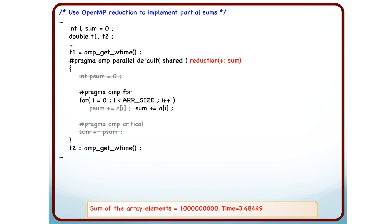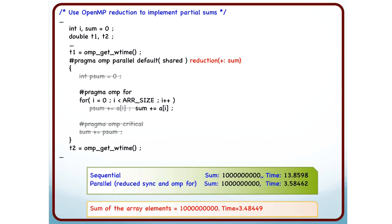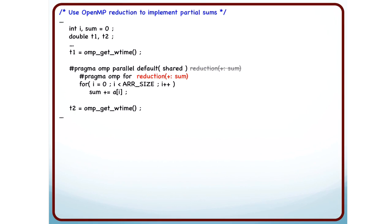I again execute the code, it is the same time. Looks good. So this reduction plus colon sum, that is something that I can specify at the directive at the parallel region with hash pragma OMP parallel or I can specify it at hash pragma OMP for.